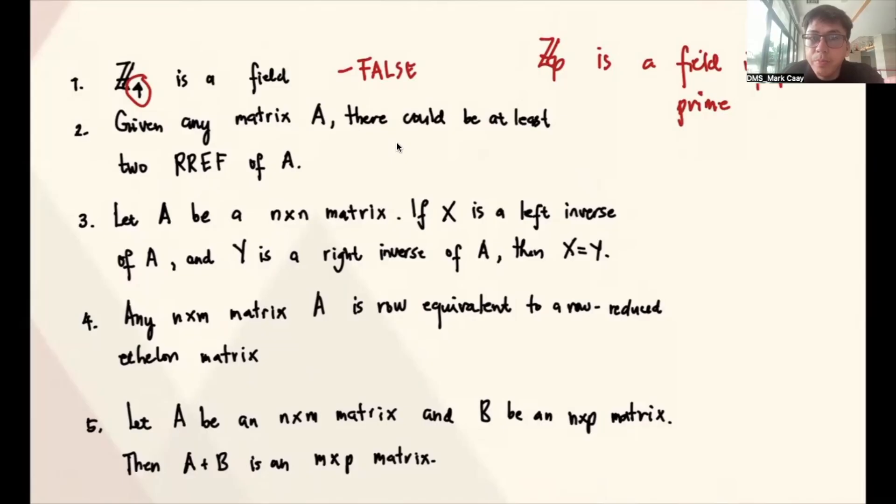There could be a lot of processes to achieve the RREF. For us to get the RREF of a matrix, we have to do basic operations. Number 1, we can interchange 2 rows. Number 2, we can multiply the row by a scalar. Number 3, we can add 1 row with a multiple of the other. Whatever order you do, the resulting RREF should be unique. So therefore, this is false.